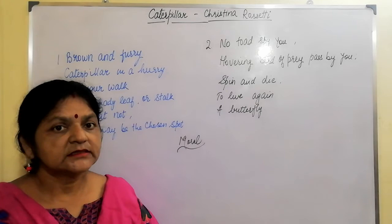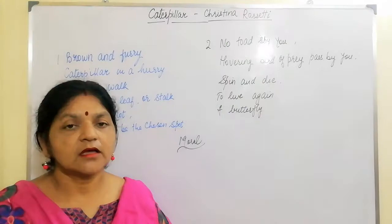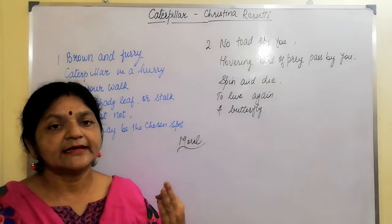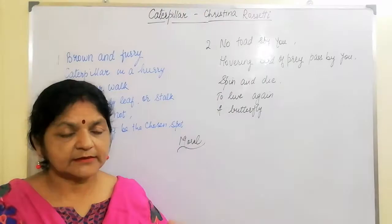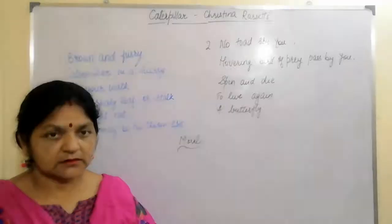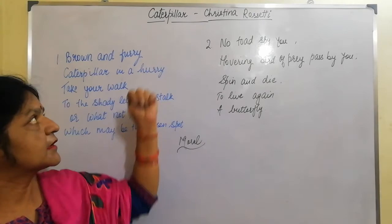A butterfly's life cycle has four stages: egg, larva — that is the caterpillar — pupa, and finally the butterfly. The caterpillar sheds its old skin four or more than four times when it is in the growing stage, so that a new skin takes the place of its grown body.